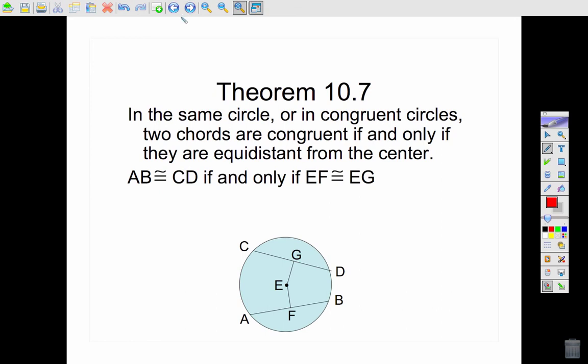And Theorem 10-7, if we're in the same circle or congruent circles, two chords are congruent if and only if they are equidistant from the center. So if I know that EF and EG are congruent, then I know that CD and AB are congruent, and we have an if and only if, so that works the other way as well. If I know the chords are congruent, then they are equidistant from the center.